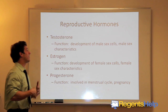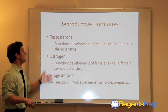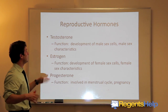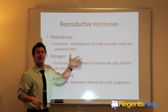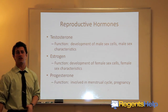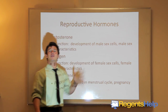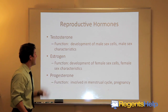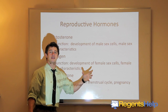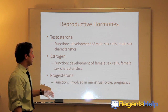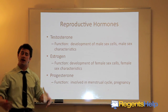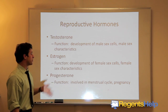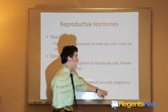Three reproductive hormones you should know are testosterone, estrogen, and progesterone. You can see 'testes' in testosterone — it's associated with males. Testosterone functions to develop sex cells and sex characteristics: sperm, broader muscles, deeper voice, Adam's apple, facial hair. Estrogen is involved in the development of female sex cells (ovaries) and female sex characteristics: widening of the hips, breasts, and the menstrual cycle. Progesterone is primarily involved in the menstrual cycle and pregnancy.